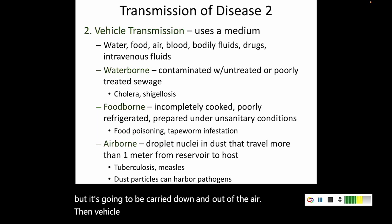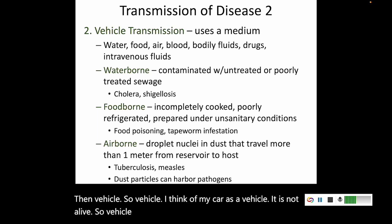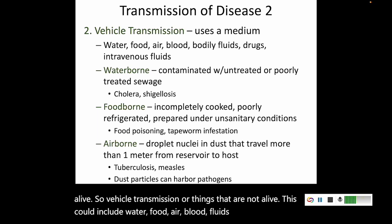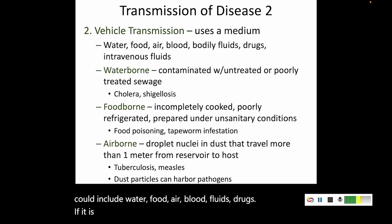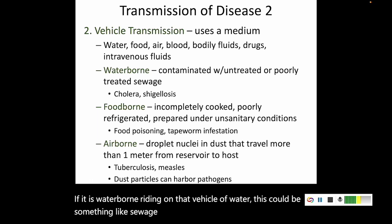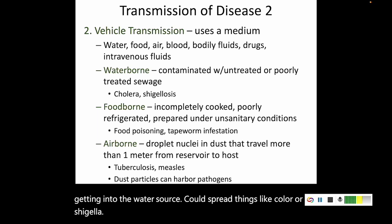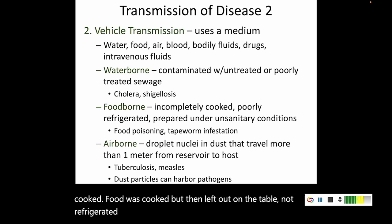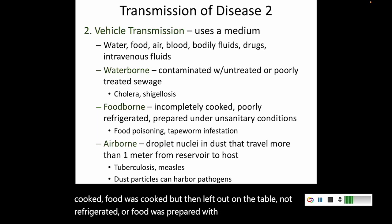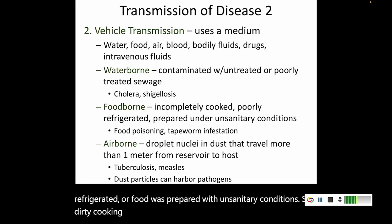Vehicle transmission — like a car, a vehicle is not alive. Vehicle transmission uses non-living things: water, food, air, blood, fluids, drugs. If waterborne, riding on that vehicle of water, this could be sewage — untreated or poorly treated sewage getting into the water source can spread cholera or shigella. If foodborne, this includes food not completely cooked, food cooked but left out and not refrigerated, or food prepared in unsanitary conditions with dirty utensils or unwashed hands — this could lead to food poisoning or tapeworm infestation.